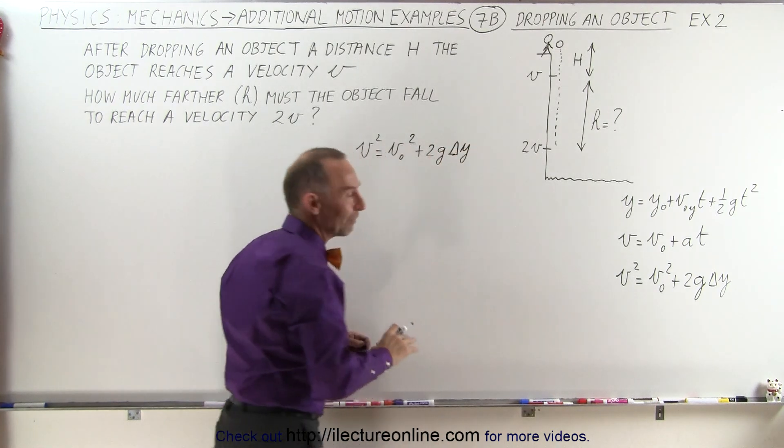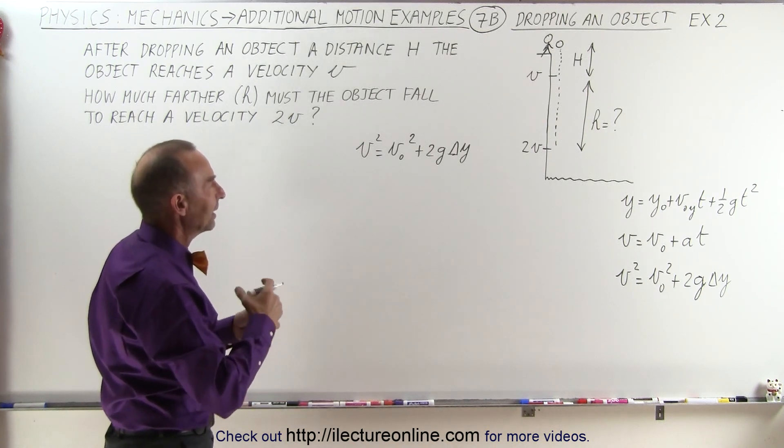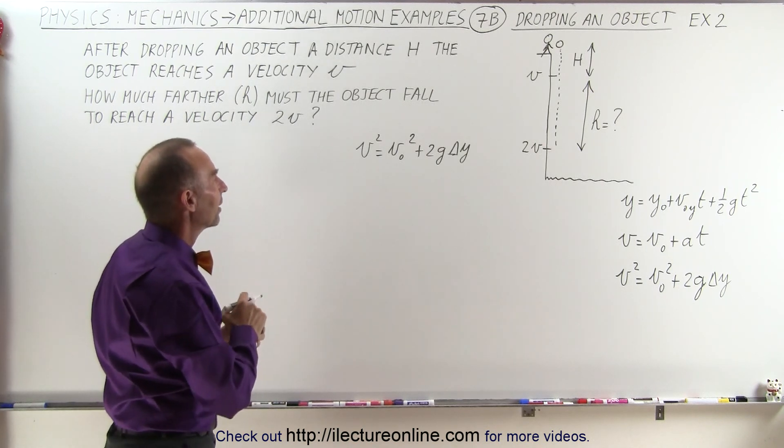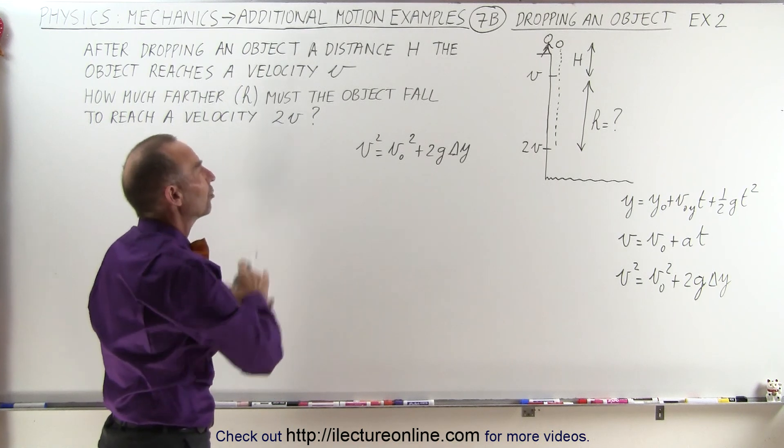And we can use everything positive again because we simply want the magnitudes. We don't care that it's a negative velocity, negative height. We can simply see how far did it go in a certain amount of time or how far did it go when it reaches a certain velocity.